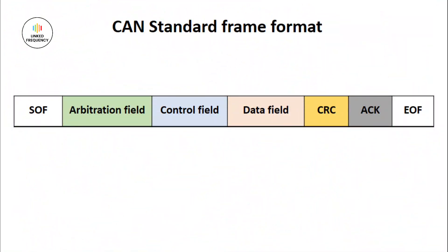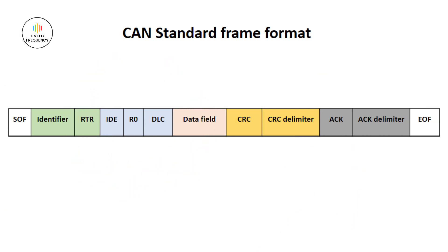Let's begin by understanding the Standard Frame Format first. The screen represents the structure of the CAN Standard Frame, which contains Start of Frame, Arbitration field, Control field, Data field, CRC, Acknowledgement, and End of Frame. In detail, the Arbitration field has Identifier and RTR, and the Control field has IDE, R0, and DLC, followed by the Data field, CRC, Acknowledgement, and End of Frame.